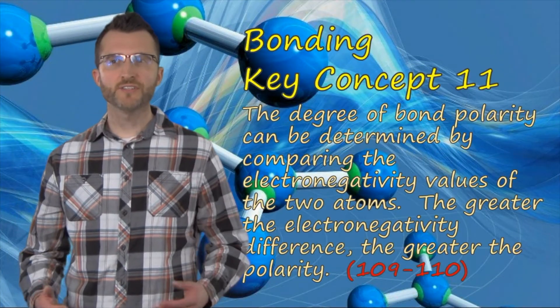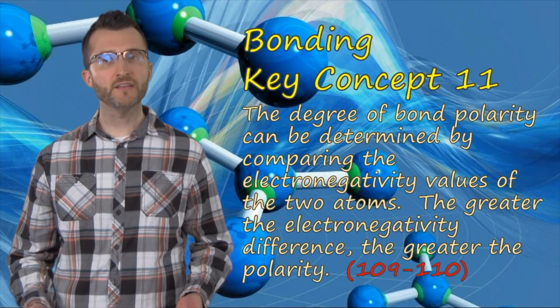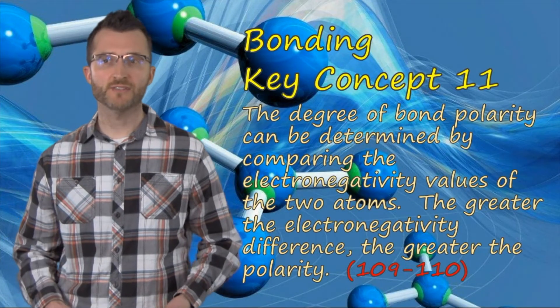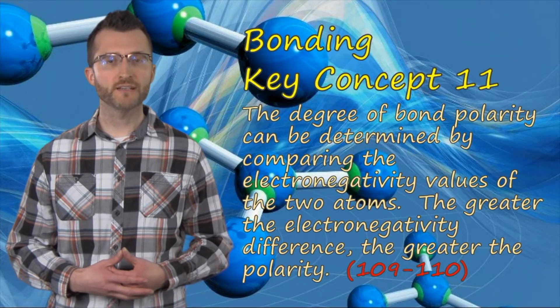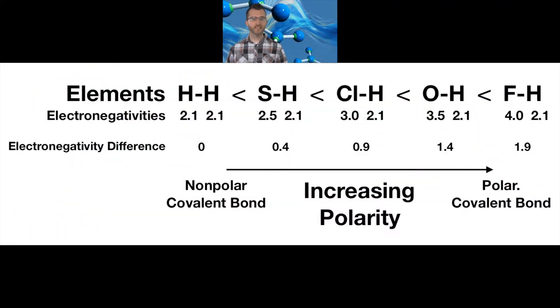Bonding key concept eleven. The degree of bond polarity can be determined by comparing the electronegativity values of the two atoms. The greater the electronegativity difference, the greater the polarity. If we look at our picture here, we can see that on the extreme left, we have an HH bond. When we take the difference in the two electronegativity values, we get zero. Thus, this is a nonpolar bond. If we look to about the middle, we've got an HCl bond. When we subtract the two electronegativity values, we get 0.9. This means that this is a polar covalent bond. If we look on the extreme right, we have an HF bond. The electronegativity difference is 1.9. This is also a polar covalent bond. It is just much more polar than the HCl bond.